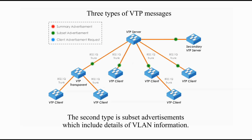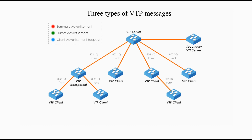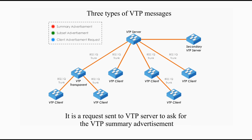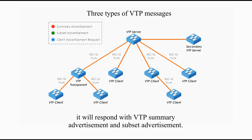The second type is subset advertisements, which include details of VLAN information. Subset advertisements follow the summary advertisement. The third type is client advertisement request — a request sent to the VTP server asking for the VTP summary advertisement and subset advertisement. When the server hears the request, it will respond with VTP summary advertisement and subset advertisement.